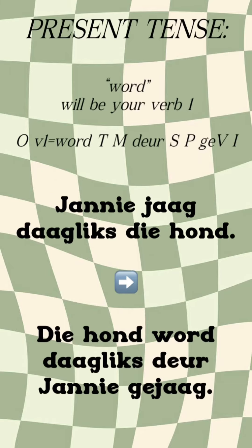So with present tense, 'word' will become your new verb one. So the formula is: object, verb one is 'word', time, manner, dir, subject, place, ge, verb, infinitive. So 'Jani jaag daagliks die hond' becomes 'Die hond word daagliks deur Jani gejaag.'